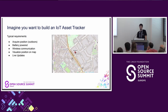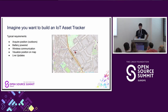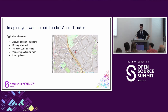What are the typical requirements for such a device? First of all, you need to be able to acquire a position of the device, probably outdoors. The asset tracker should be battery powered. You need some wireless uplink to the cloud to communicate data. You also want to visualize the position on a map and get live updates of the data.